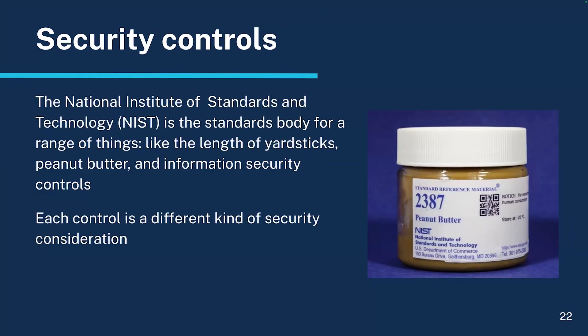The National Institute of Standards and Technology, or NIST, is a standards body for a range of things — like the length of yardsticks, to example peanut butter, to information security controls. That is why I have a picture of a $300 jar of NIST peanut butter on the right. Controls are basically considerations for building secure software. Some controls can be covered by implementing software correctly, like making sure your site has the logs it needs. Other controls touch on policy or the human element — for example, someone needs to be responsible for making sure accounts are kept up to date and people don't retain access to systems after they leave. Federal security compliance is based on evaluating these criteria, defined by NIST in Special Publication 800-53, currently revision 5.